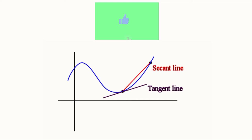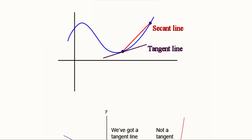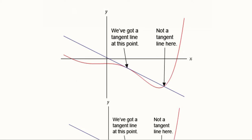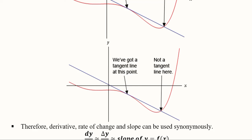Before going further, here is an important distinction between a tangent line and a secant line. A tangent line touches the curve at one point only, whereas a secant line meets the curve at two points. We are talking about the tangent, not the secant. Here is another diagram: this is a tangent line at a point, but this other line is not a tangent because it cuts the curve rather than simply touching it.